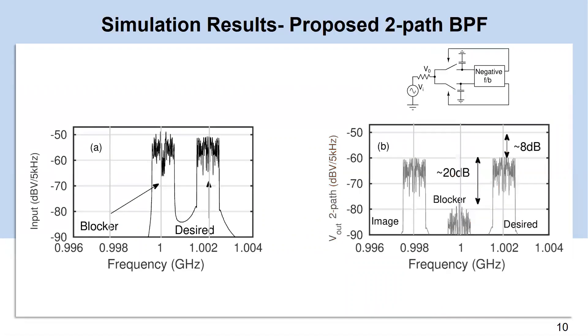On the other hand, the proposed architecture shows the same blocker attenuation improved by 20 dB without much affecting the desired signal. It has image frequency because 2-path filter does not have a combined path of in-phase and quadrature phases unlike 4-path band-pass filter.